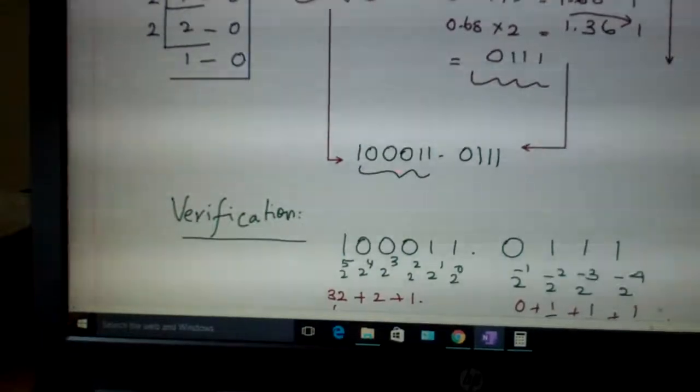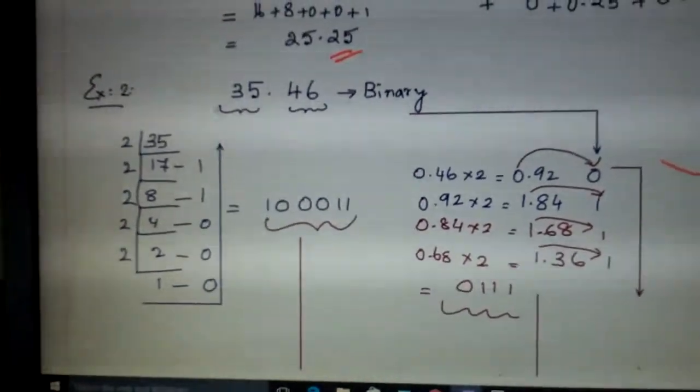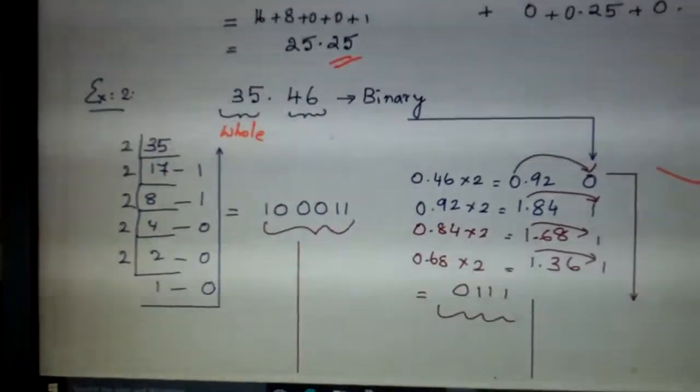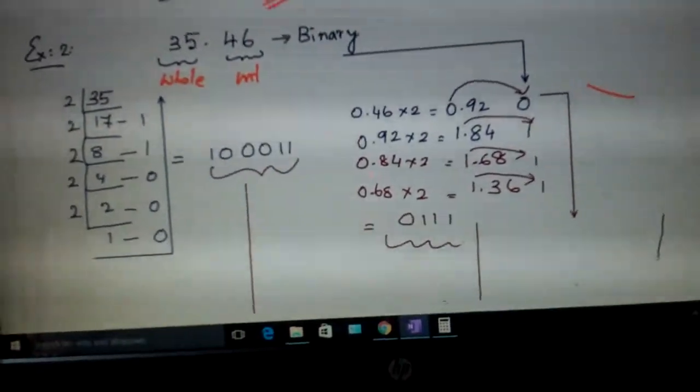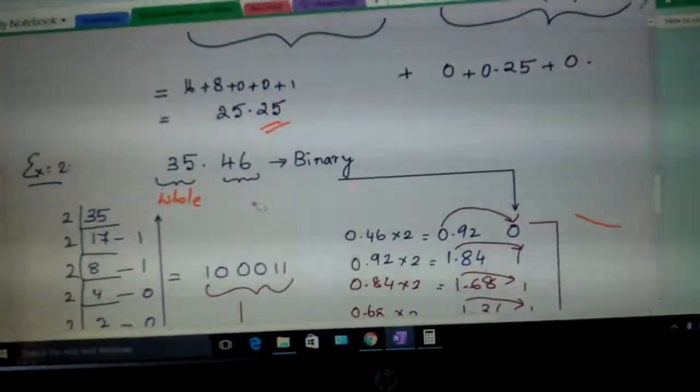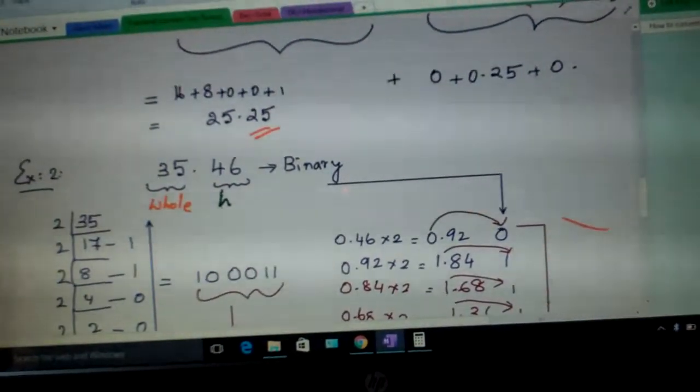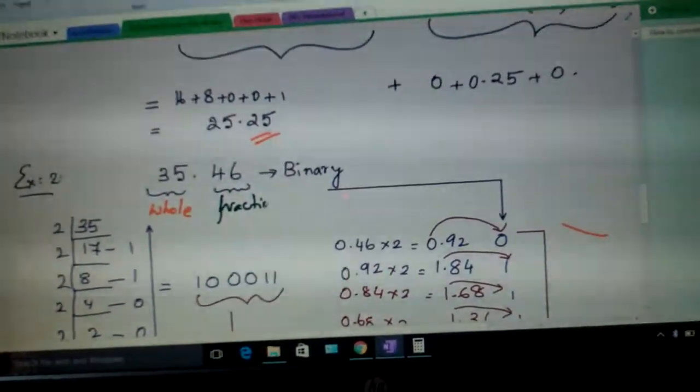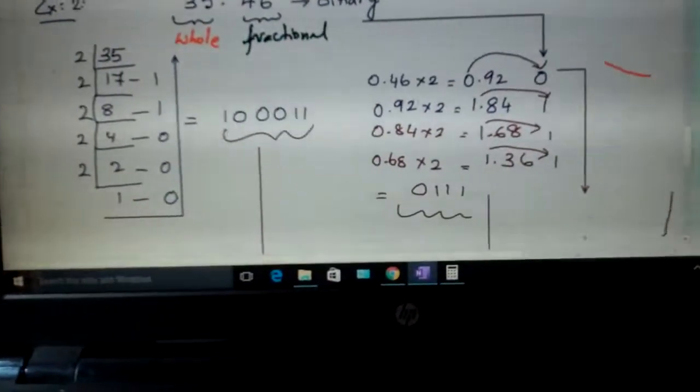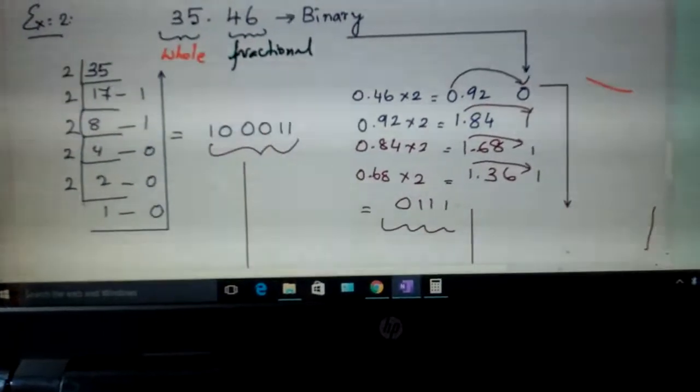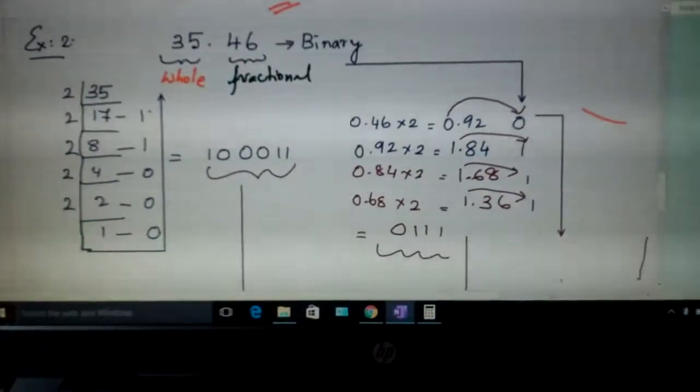Now let us see another example. Another example that I have taken here is 35.46. You are converting it into binary. So this is your whole number part. And this is your fractional part. So as before convert 35 into binary by going on multiplying it. Write this in the reverse order: 100011.